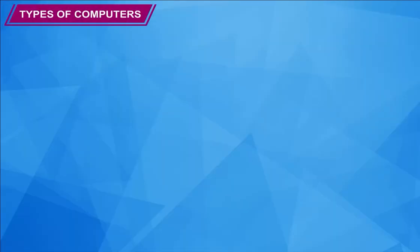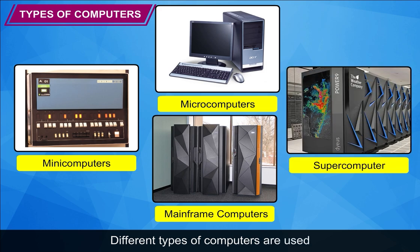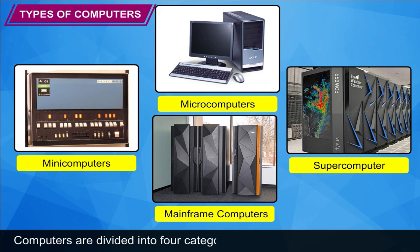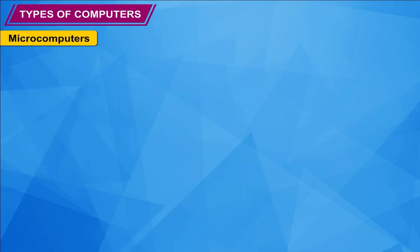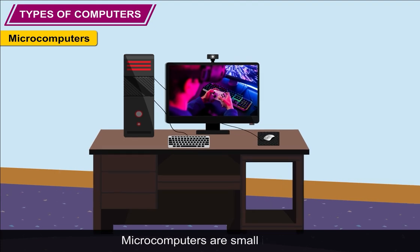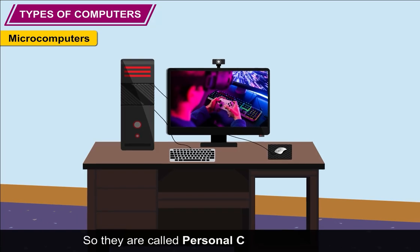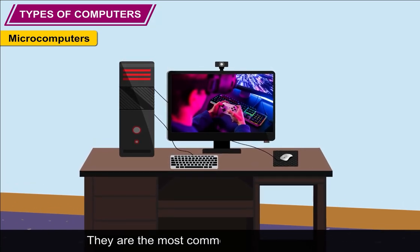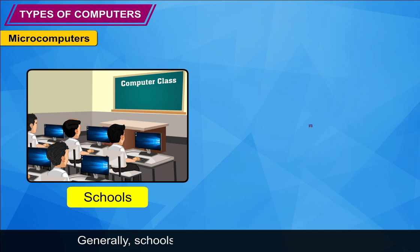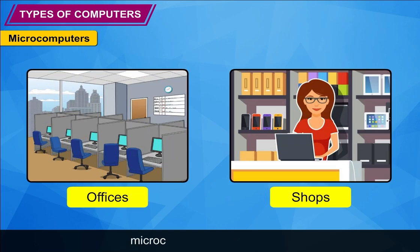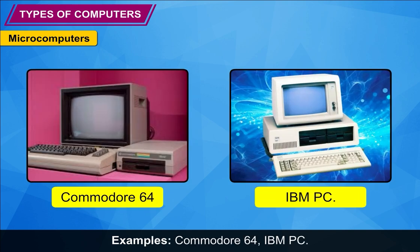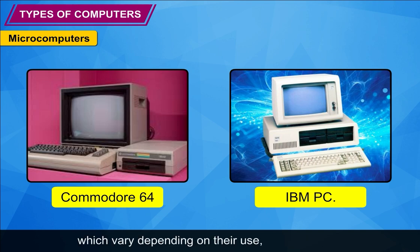Different types of computers are used at various places for different purposes. Computers are divided into four categories based on their size. Microcomputers are small in size and designed for use by one person, so they are called personal computers (PCs). They are the most commonly used computers, generally found in schools, homes, offices, and shops. Examples include Commodore 64 and IBM PC.